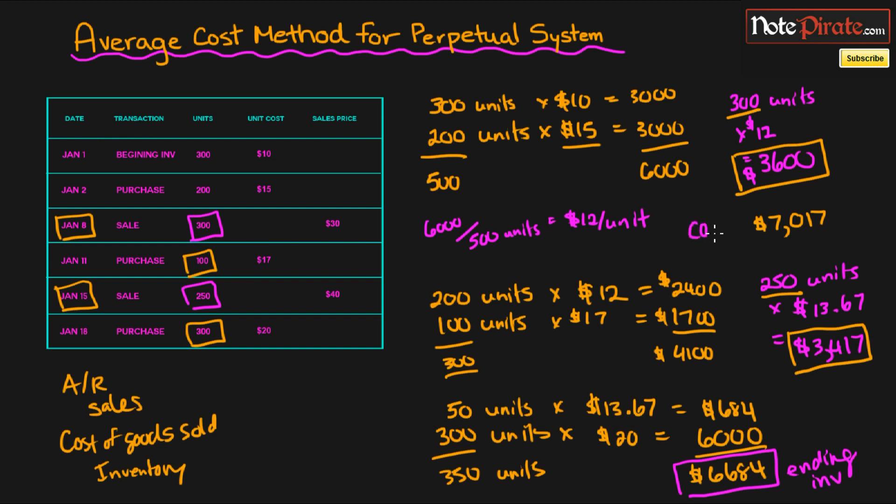And that will be our cost of goods sold. So actually I'm just going to restate it right over here since I've got so much going on. So cost of goods sold, our ending cost of goods sold is going to be $7,017 while our ending inventory is going to be $6,684. So there you go, you've done it. You've created the moving average for the perpetual system.